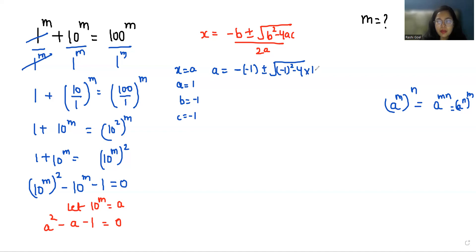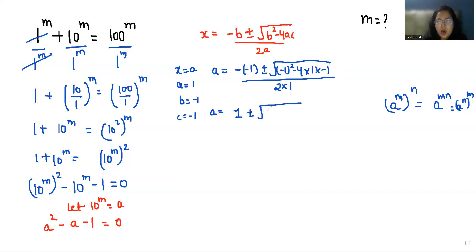So a = (−(−1) ± √((−1)² − 4·1·(−1))) / (2·1), which gives a = (1 ± √(1 + 4)) / 2, so a = (1 ± √5) / 2.